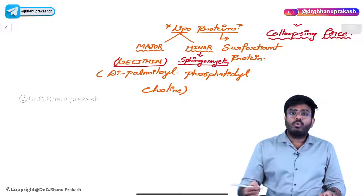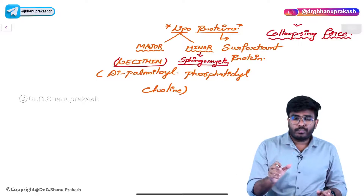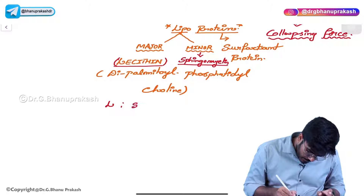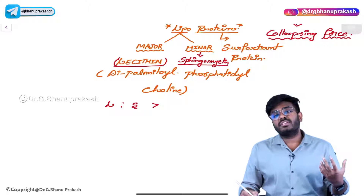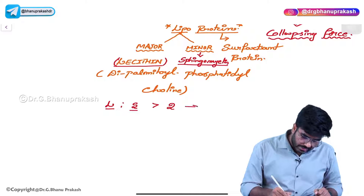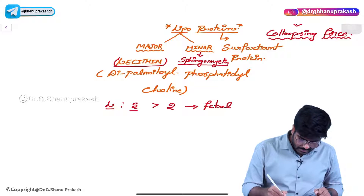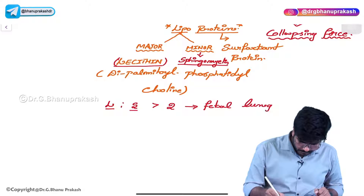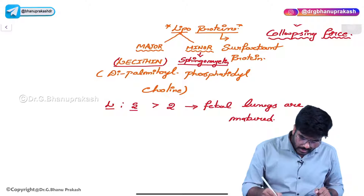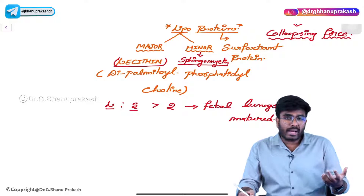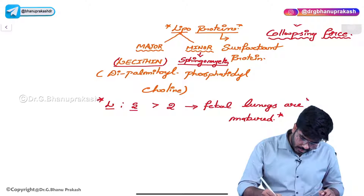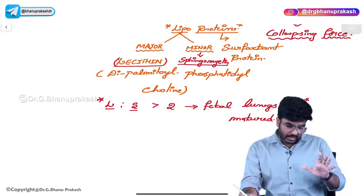The ratio of lecithin to sphingomyelin is used to determine whether fetal lungs are matured or not. If the lecithin-sphingomyelin ratio is greater than 2, it indicates that the fetal lungs are matured.